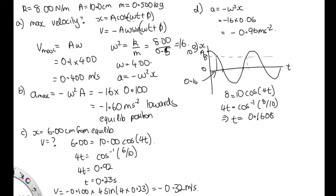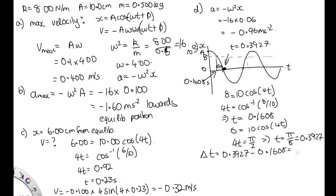0.1608 seconds. And now we need to find this second time here when it's at 0. So we've got 0 is equal to 10 cos 4t. Cos is equal to 0 when this angle in here is equal to pi on 2, so we've got 4t is equal to pi on 2. So t is equal to pi on 8, which is approximately equal to 0.3927. So the time interval here is equal to 0.3927 minus 0.1608. Solving that, we get 0.232 seconds to three significant figures.